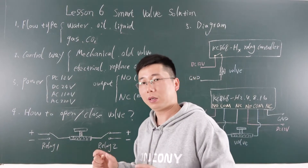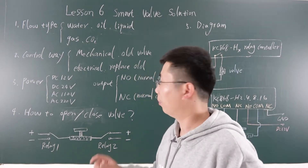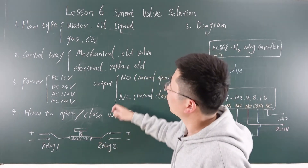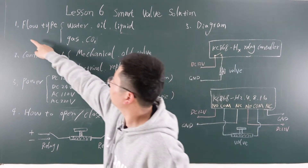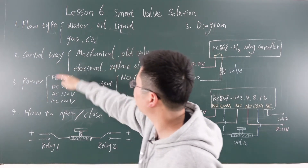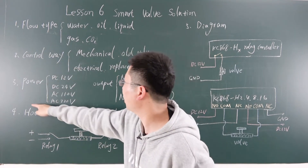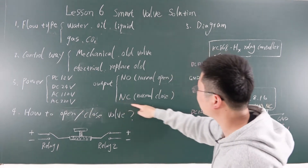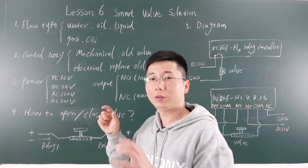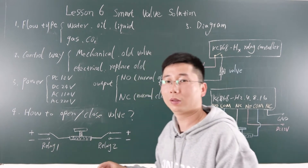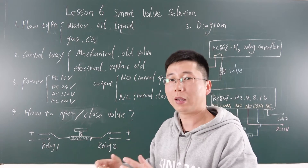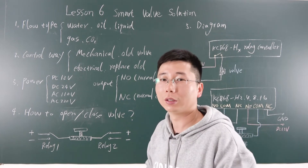Now if you want to make a project about the smart valve, you need to know how to choose the valve. You adjust according to: the flow type, the control way, the power voltage, and the output type. From these, you can design and confirm which type of electrical device you need.